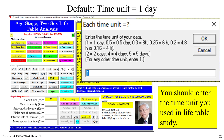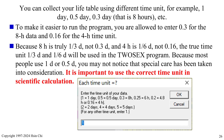When you see the time unit message, you must enter the correct time unit for your data. You can collect your life table using different time units — for example, 1 day, 0.5 day, 0.3 day (8 hours), etc. You may enter 0.3 for the 8-hour unit and 0.16 for the 4-hour unit. Because 8 hours is truly one-third day and 4 hours is one-sixth day, the true time units will be used by the 2-Sex program.